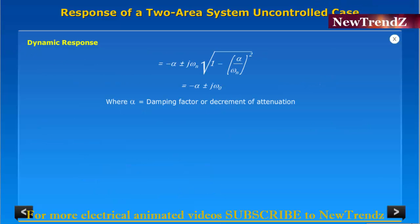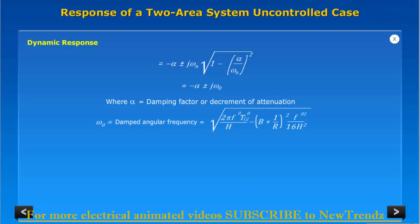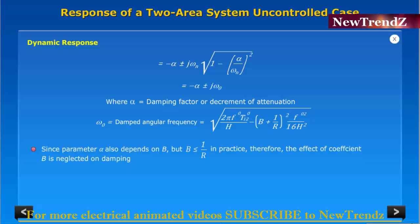Where alpha is equal to damping factor or decrement of attenuation, and ωd equal to damped angular frequency. Since parameter alpha also depends on b, but b is less than or equal to 1/R in practice, therefore the effect of coefficient b is neglected on damping.